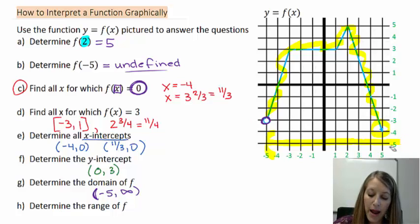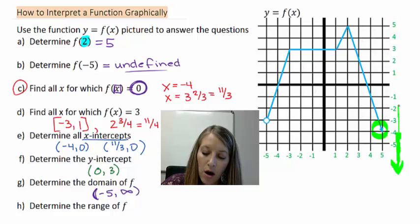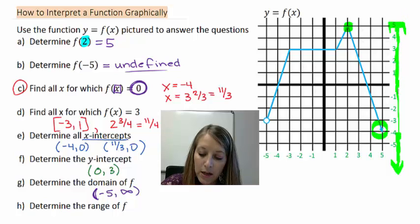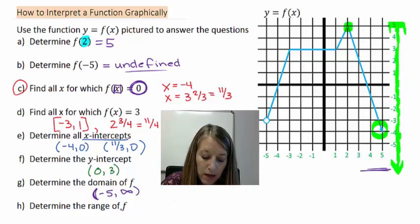In part H, the range. Range is the acceptable y value. So since our graph goes down forever, that means our y value, our lowest y value goes down forever and up to our highest y value. We see our highest y value at this point right here. It is a specific point, so it does include that y value there. So this is my range of my graph. Remember, when you write this in interval notation, it goes from the smallest number, the bottom of the graph here, to be negative infinity, to the largest part of the graph, which is positive 5, which is included.